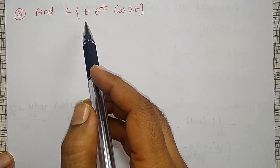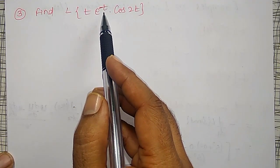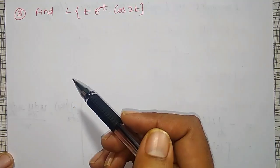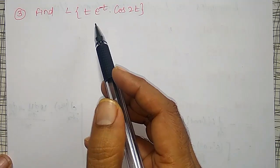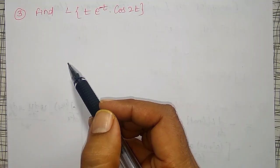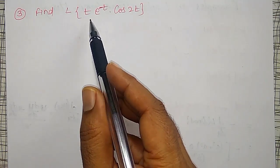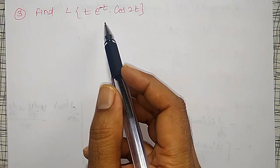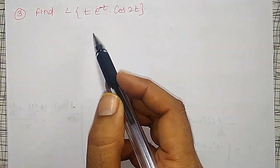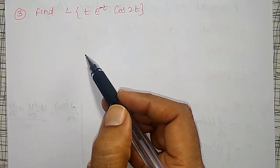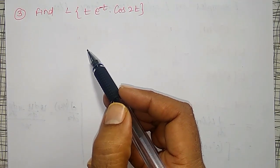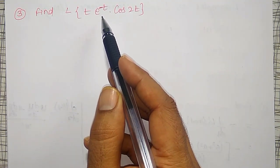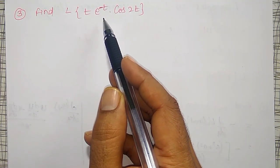Next example: find the Laplace transform of t into e to the power minus t times cos 2t. Here a product of three terms is present. I have to apply both properties. I can solve this in two ways: I can treat e to the power minus t times cos 2t as f of t, or e to the power minus t into t cos 2t.